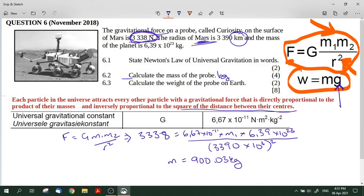So to find the weight of the probe on Earth, we're going to use the formula weight equals mass times the acceleration due to gravity. So the mass we just calculated, 900.03 kilograms. And the acceleration due to gravity, we get it from the data sheet. It is 9.8. I didn't copy and paste it here, but you know how to get it off the data sheet, yes?